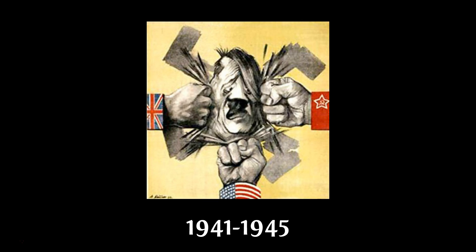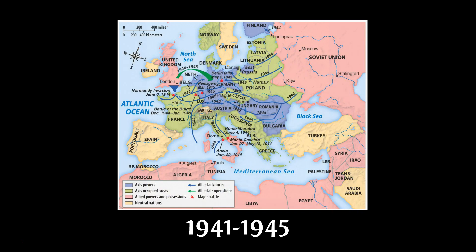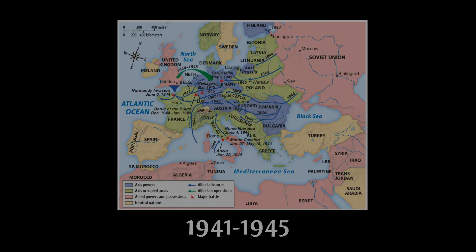Hitler was crushed from both sides, with the Soviet army pressing in from the east and the United States and Britain closing in on the west, until the Allies met in Berlin in 1945 for the final defeat of the Nazis.